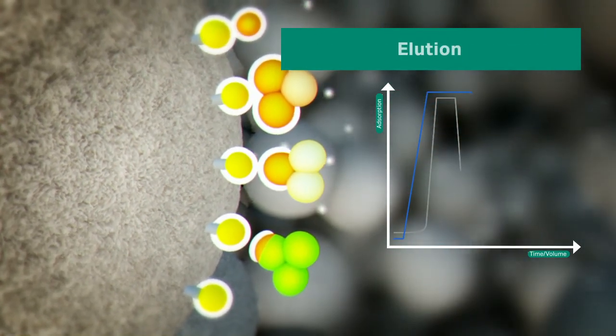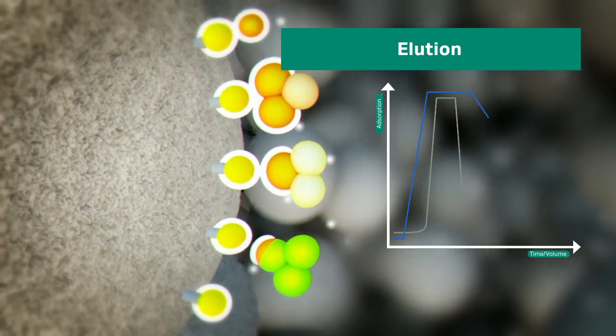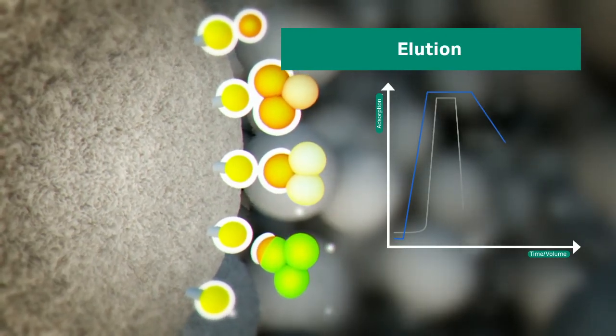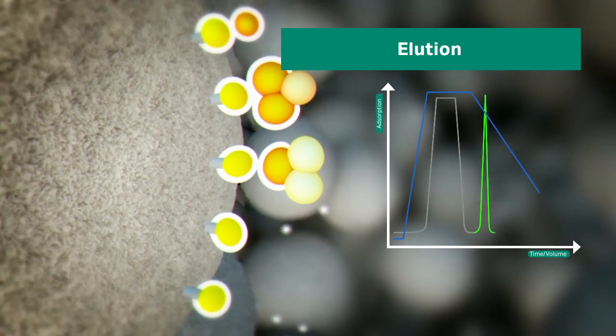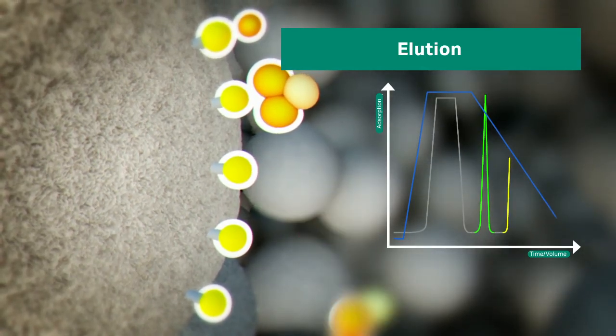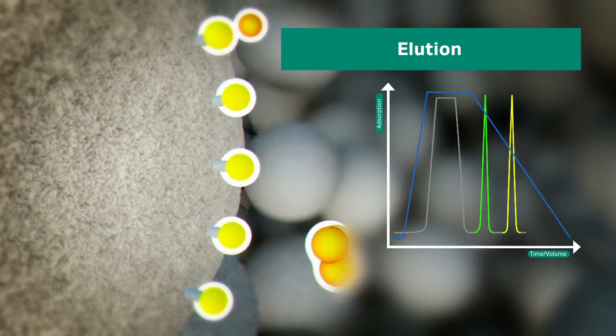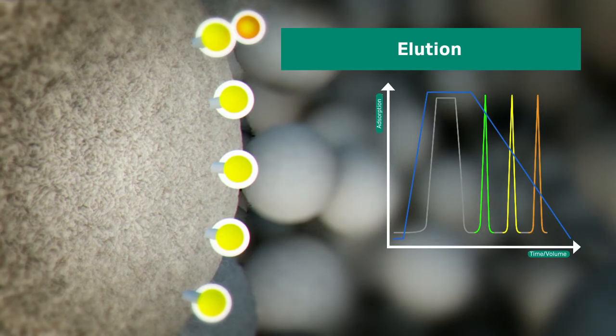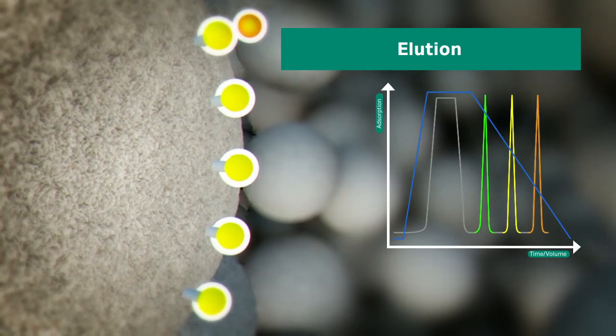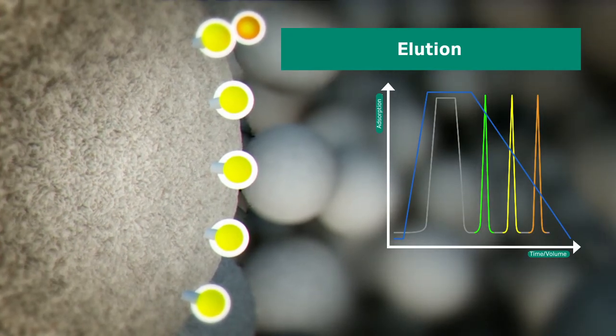In the third step, elution, biomolecules are released from the hydrophobic surface by a change in the buffer composition. A common way is to decrease the salt concentration of the buffer. Gradient elution can be used to separate the target protein from other bound proteins. Normally, a gradient of 10 to 15 column volumes is sufficient.